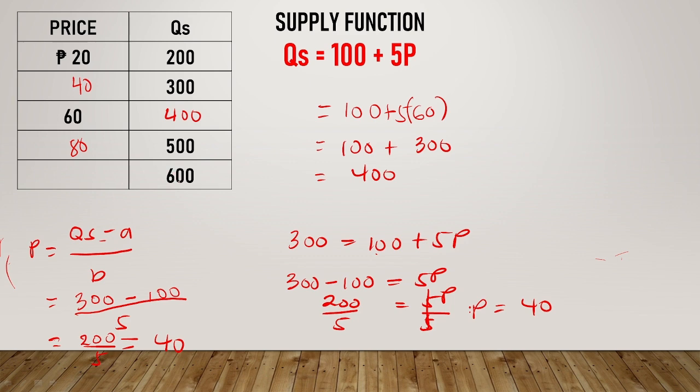So how about this one? 600 minus 100 is 500, divided by 5, it's 100. Okay, so correct ba yung answers? So that's how the supply function works. You can go back to this video again if you're confused, rewind the video.